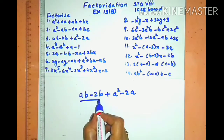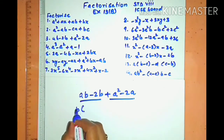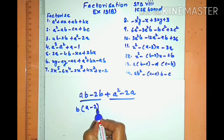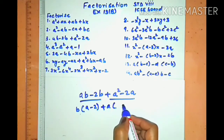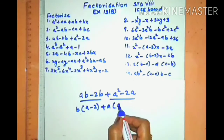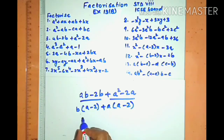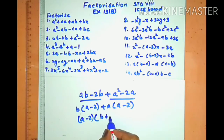Sum number three. Make pairs. In the first pair b is common, taken out, with (a − 2) in the bracket. In the second pair, a is common, taken out, with (a − 2) in the bracket. Now these two terms have (a − 2) as a common factor, written outside the bracket, and in the bracket we have b + a.